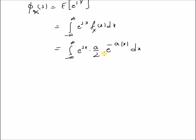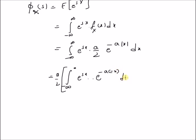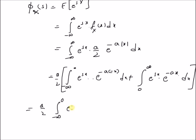Since we have the modulus of x, we split this integral into the sum of two integrals: one from minus infinity to zero, and the other from zero to infinity. That is, the integral from minus infinity to zero of e to the power of sx times (a/2) times e to the power of negative a times negative x dx, plus the integral from zero to infinity of e to the power of sx times e to the power of negative ax dx. This simplifies to (a/2) times the integral from minus infinity to zero of e to the power of (s+a)x dx, plus the integral from zero to infinity of e to the power of (s−a)x dx.